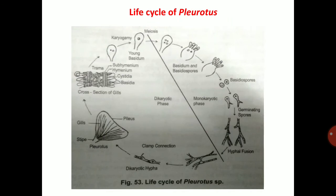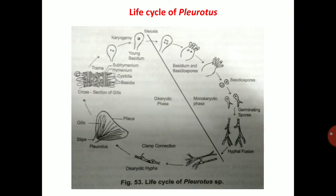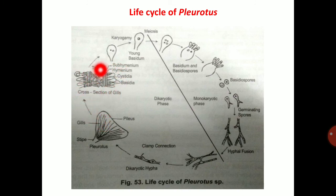Life cycle of Pleurotus: starting with basidiospores, which germinate and produce monokaryotic primary mycelium of plus and minus mating types. These fuse together to produce secondary mycelium with clamp connections. After clamp connections, a fruiting body is produced. In the fruiting body, at the gill portion, hymenium is produced. The hymenium contains basidia, and basidiospores are formed through sterigmata.